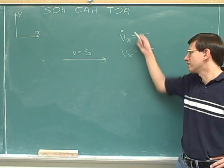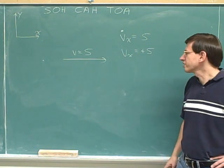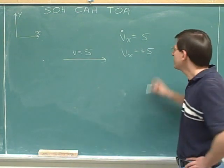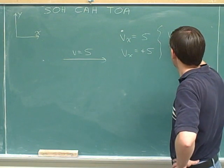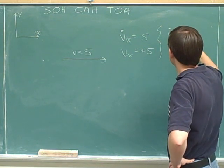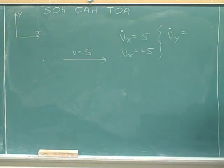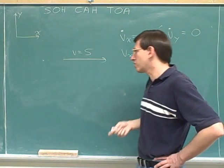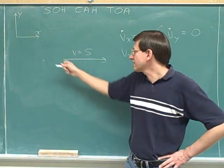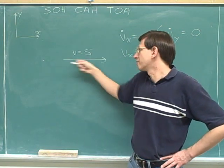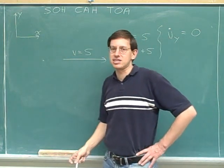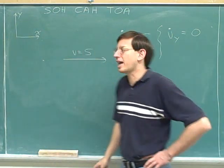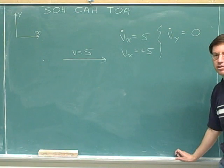It really might be a good habit to write both of these things down about this vector. Ultimately, the signed component is probably what we're more interested in, but writing the magnitude is a good first step. Now, what about the y-components? The magnitude of the y-component is zero — that's the way of showing there is no y-component. This vector is completely parallel to the x-axis, so the y-component is zero.